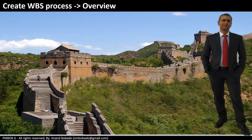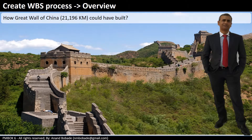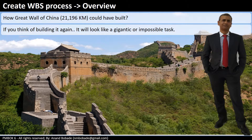What do you think the length of this wall is? 100 km? 500 km? 1000 km? You will be surprised to know the total length of the Great Wall of China is about 21,000 km. The question that always bothers everyone is: how could this have been built? If you think of building it again, can you really build it? It looks like a gigantic or impossible project.